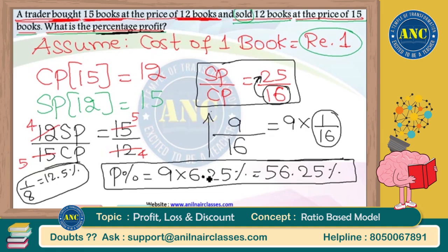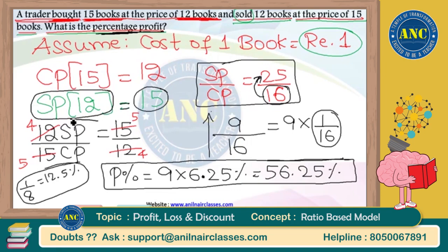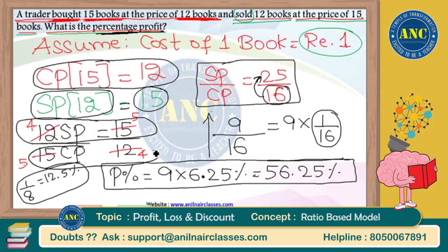Every concept discussed earlier is extremely important. How is 12 SP divided by 15 CP derived? This equation is simply 12 SP = 15, and I put a division sign in between — that's all, there is no difference. These are very basic concepts taught in the first class.